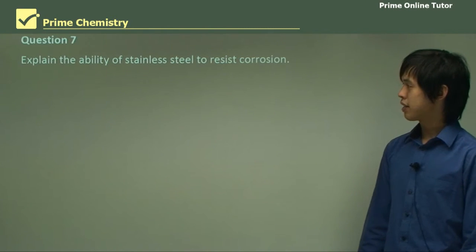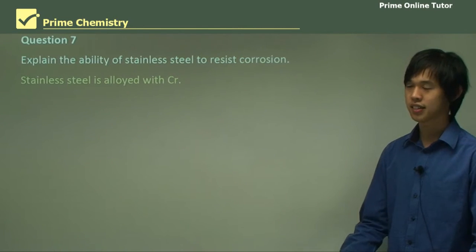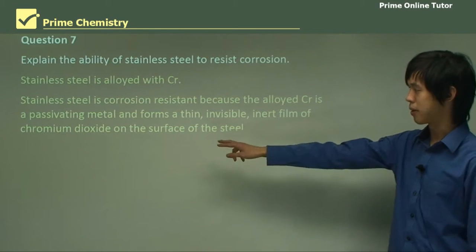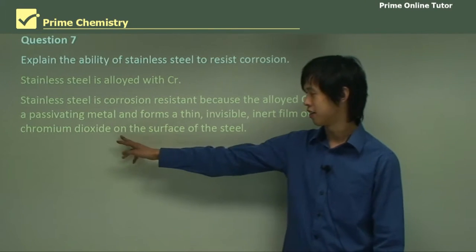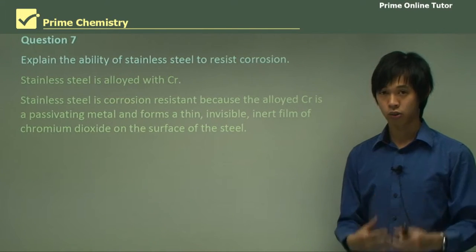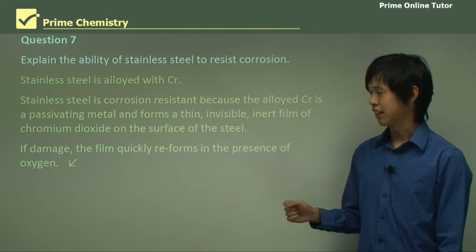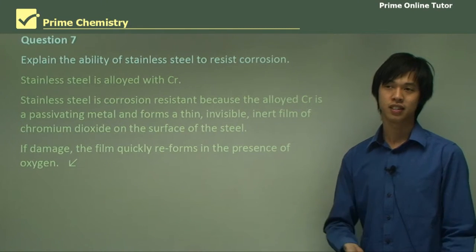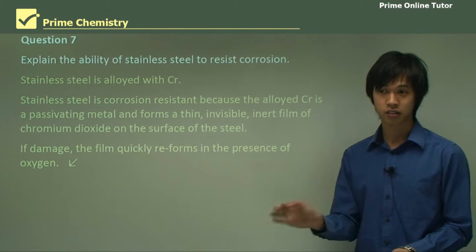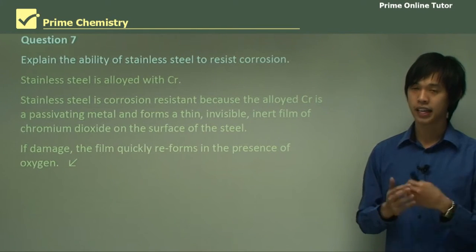Question: Explain the ability of stainless steel to resist corrosion. Stainless steel is iron alloyed with chromium. Because chromium is a passivating metal, it forms a very thin, invisible, inert film of chromium dioxide on the surface. This layer is very strong and practically chemically unreactive. If that layer gets damaged, the film quickly reforms in the presence of oxygen. For example, cutting on your stainless steel sink might damage the layer, but it quickly reforms — that's why stainless steel is corrosion resistant; it comes back to the passivation concept.